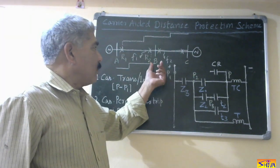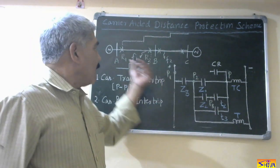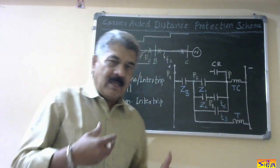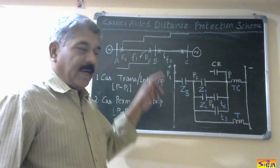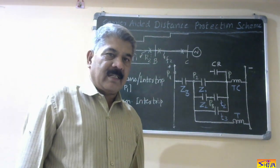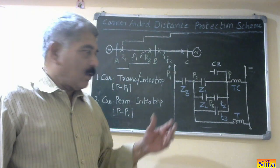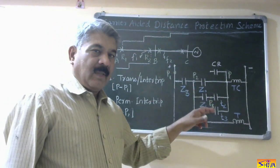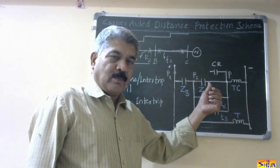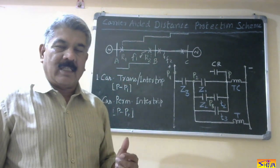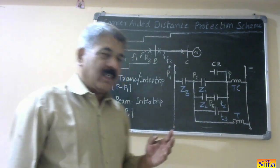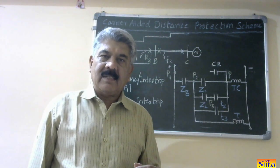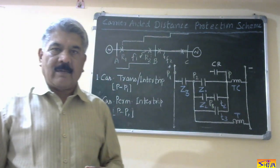It means R2 is operating in the first step for F1 and R1 is operating in the second step. Now, we have to extend the tripping zone of relay R1 up to end B. That is done by the carrier-aided distance protection scheme. According to the connection of the carrier receive relay in this contact diagram and whether this contact is open or closed, the carrier distance protection schemes are classified into four categories: first is carrier transfer or carrier intertrip scheme; second is carrier permissive intertrip scheme; third is carrier acceleration scheme; and fourth is carrier blocking scheme.